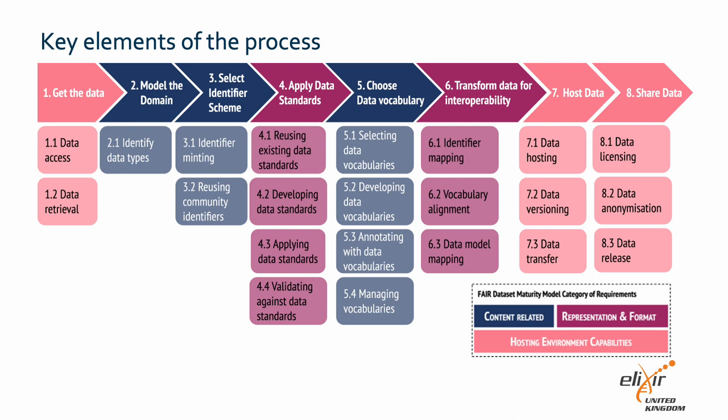Additionally, the community or domain standard for representing the data are documented to ensure alignment with the verification work along those lines, if applicable. Step three is to select the identifier scheme. In this step, an identifier is created to uniquely identify the dataset. This can be accomplished by either generating new identifiers or reusing existing ones. In cases where a solution is required to produce new identifiers, identifier minting services can be used. For additional information on the identifier minting service, please refer to the link provided in the video description.